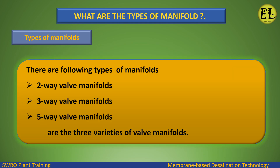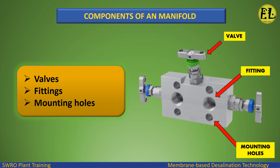Types of manifolds: there are three varieties of valve manifolds — two-way valve manifolds, three-way valve manifolds, and five-way valve manifolds. The components of a manifold include valves, fittings, and mounting holes.